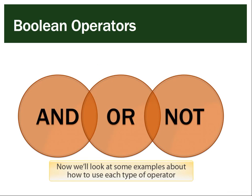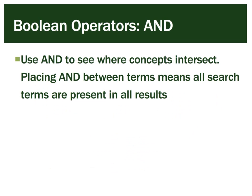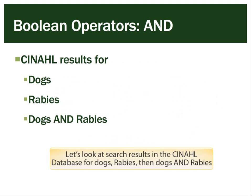Now we'll look at some examples of how to use each type of operator. Remember, you use AND to see where concepts intersect. Placing AND between terms means all search terms are present in all results. Let's look at search results in the CINAHL database for dogs, rabies, then dogs AND rabies.